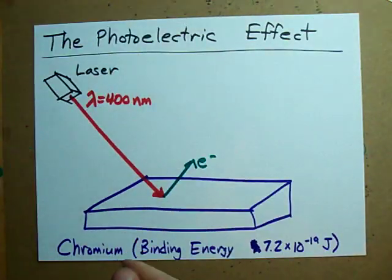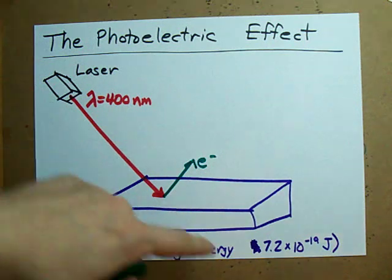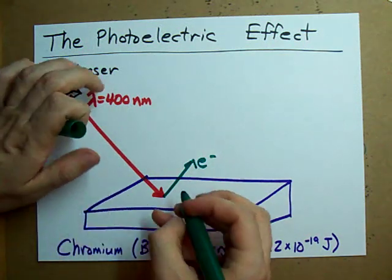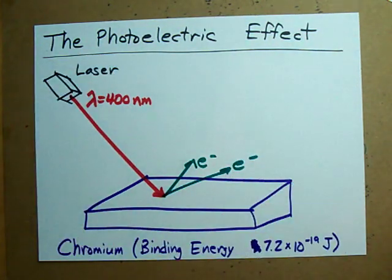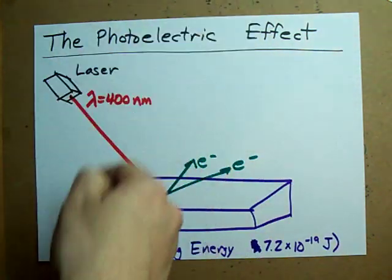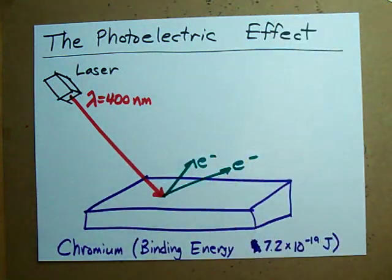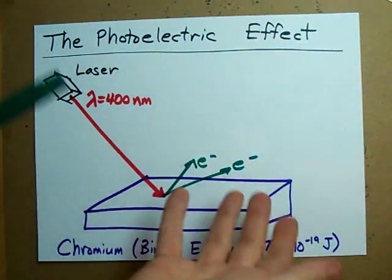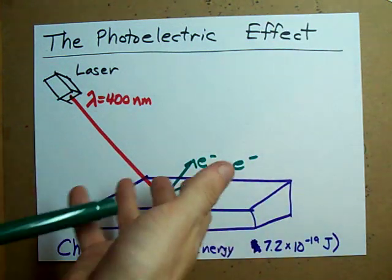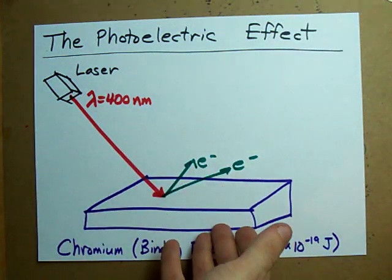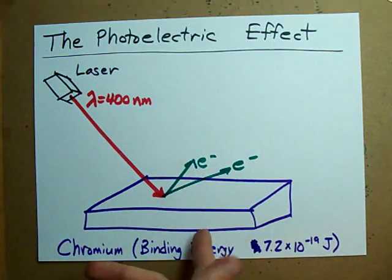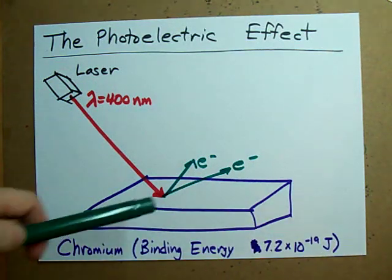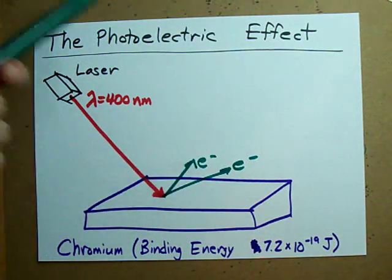Bam! There goes an electron. Another photon comes in. Bam! There goes another electron. The electrons actually fly right out of the metal. You obviously can't see them because they're electrons, but they're flying over the metal and it leaves the metal with a positive charge. Obviously you're losing negative charges.